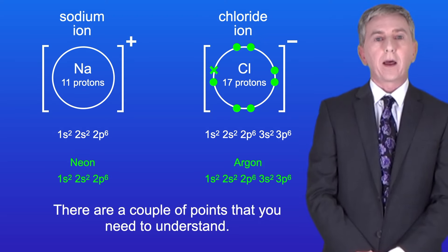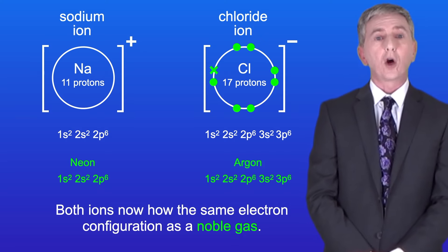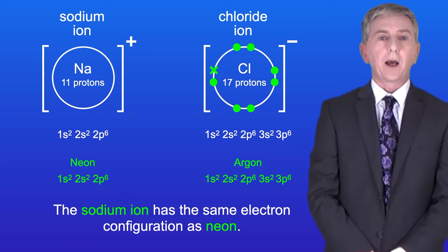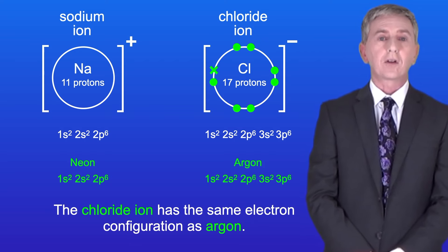Now there are a couple of points that you need to understand. Firstly, both ions now have the same electron configuration as a noble gas. The sodium ion has the same electron configuration as neon, and the chloride ion has the same electron configuration as argon.